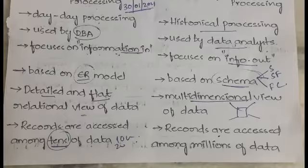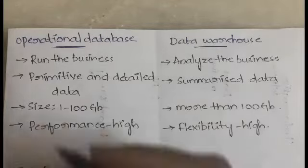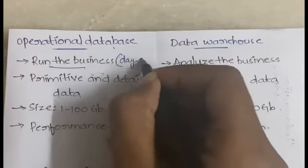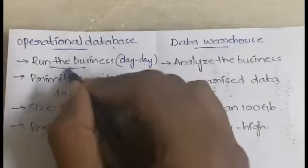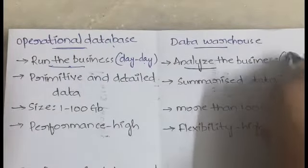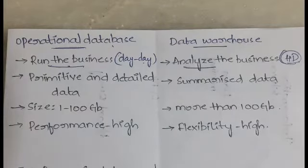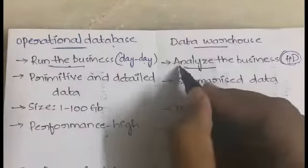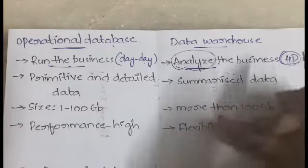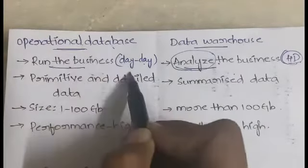An operational database is used to run the business because it holds day-to-day data. A data warehouse is used to analyze the business because it has historical data. Based on previous data you can analyze whether today shows a profit or loss compared to yesterday, last month, or last year. All that analysis can be done in the data warehouse, which is not possible in an operational database.